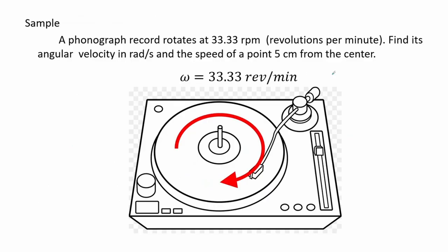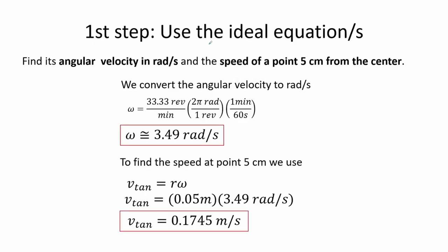Here we have a phonograph record that rotates at 33.33 revolutions per minute. Find its angular velocity in radians per second and the speed at 0.5 cm from the center. First, we convert the angular velocity from rev per minute to radians per second, which gives 3.49 radians per second. For the speed at 0.5 cm, we use the formula for tangential velocity: v equals radius times angular velocity, obtaining a value of 0.1745 meters per second.